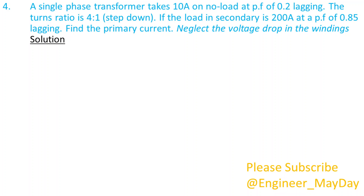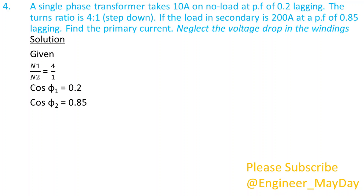Solution. Given: N1 over N2 equals 4 over 1. Cos phi-1 equals 0.2. Cos phi-2 equals 0.85. I2 equals 200 amperes. I0 equals 10 amperes.